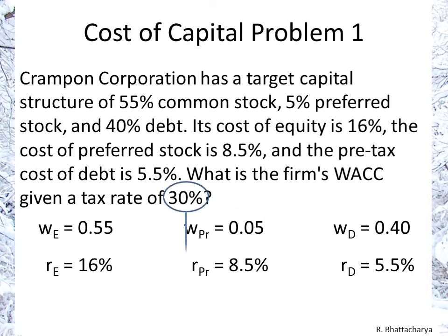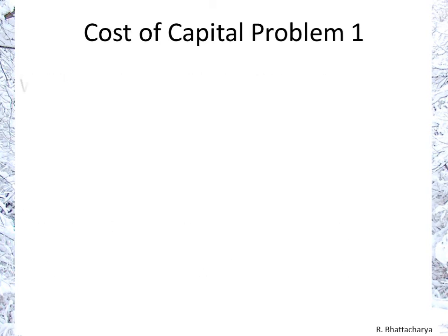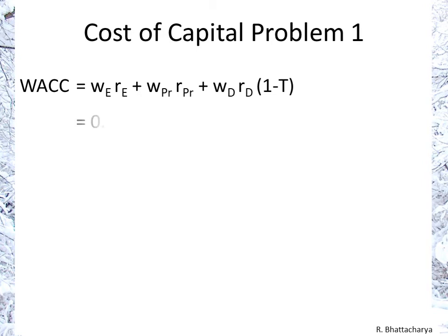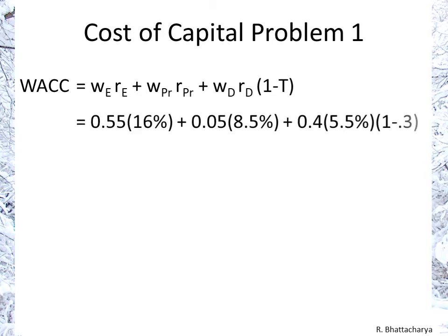Together with a tax rate of 30%, we can make the calculation: WACC = W_E × R_E + W_preferred × R_preferred + W_debt × R_debt × (1 − T). Using those numbers, that yields an answer of 10.765%, or approximately 10.77%. That's all there is to it.